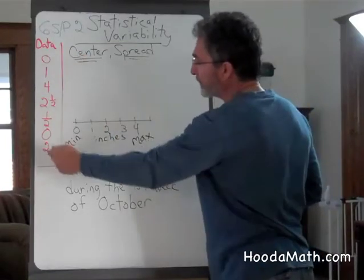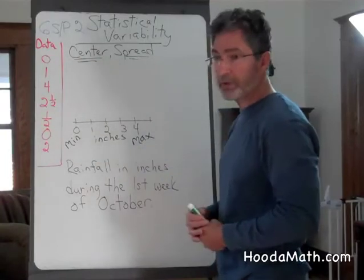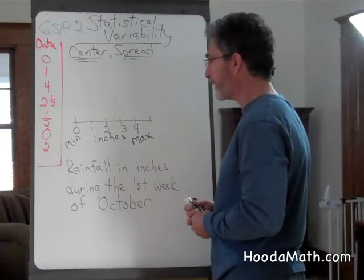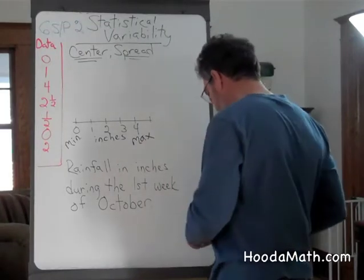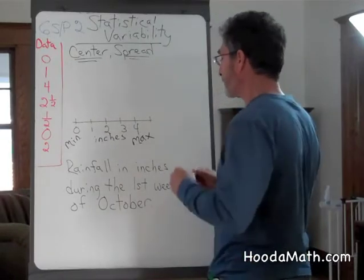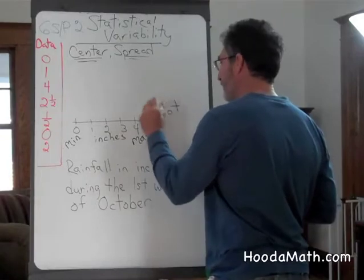These are the amount of inches of rain that fell on days 1 through 7, or October 1 through 7. If we put this on a dot plot, it helps us to see our data easily. So here's our dot plot that's going to be to our left.